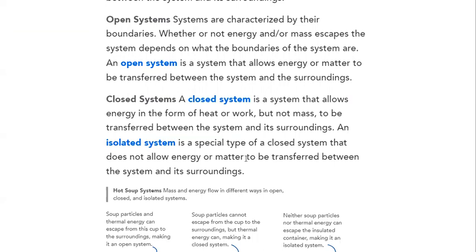Open system is a system that allows energy or matter. So we will be discussing the transformation of energy and/or matter. So if energy and matter can be transferred between the system and the surrounding, we call it an open system. Clear? A closed system allows energy, but no mass can be transferred outside the system to the surrounding.